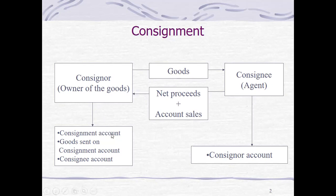In this particular contract, we will be using certain accounts. For the consigner, we'll be making a consignment account and a goods sent on consignment account — for the inventory that is sent — and then the consignee account. The consignee account is the amount we will be getting from the consignee, normally a receivable. The consigner account is a payable liability from the agent, which shall be paid to the consignor.